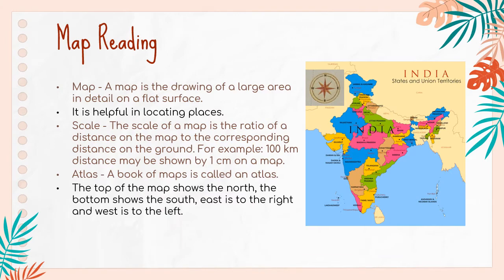Map Reading: A map is the drawing of a large area in detail on a flat surface. It is helpful in locating places. The scale of a map is the ratio of a distance on the map to the corresponding distance on the ground. For example, 100 km distance may be shown by 1 cm on a map.